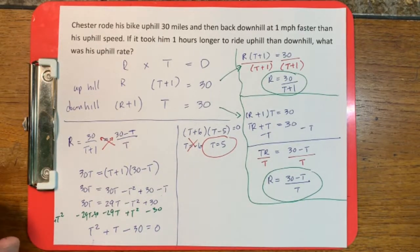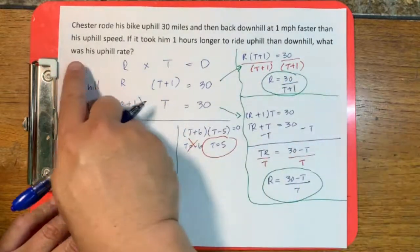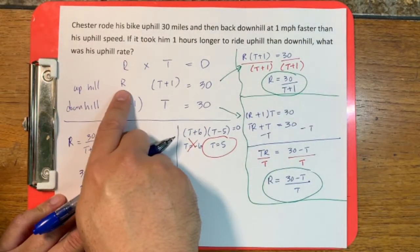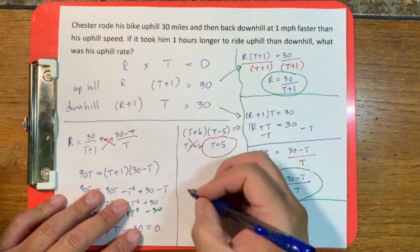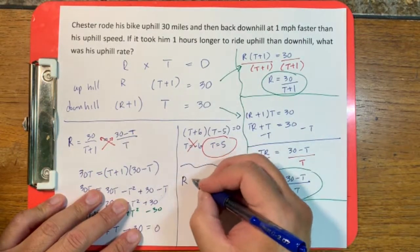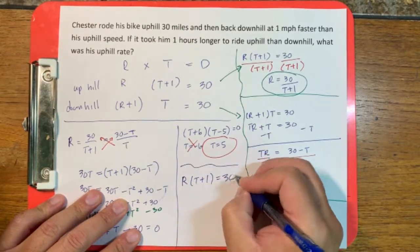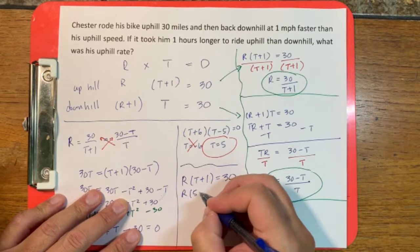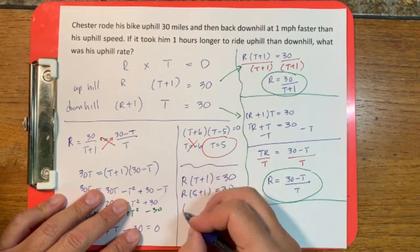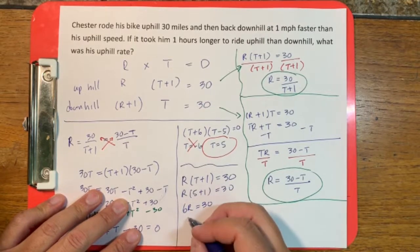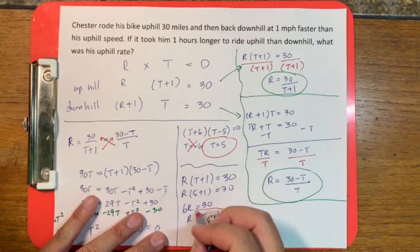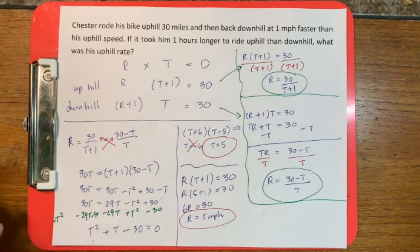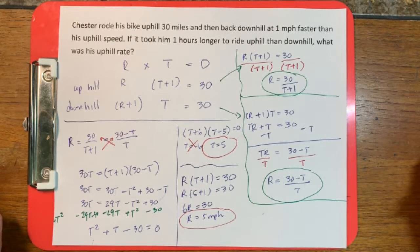The question asks for Chester's uphill rate, not T. Plugging T = 5 back into the uphill equation: R(5 + 1) = 30, so 6R = 30, giving R = 5 miles per hour. That is his uphill rate. Thank you for watching this video. If it was helpful, please like and subscribe so other people can find it.